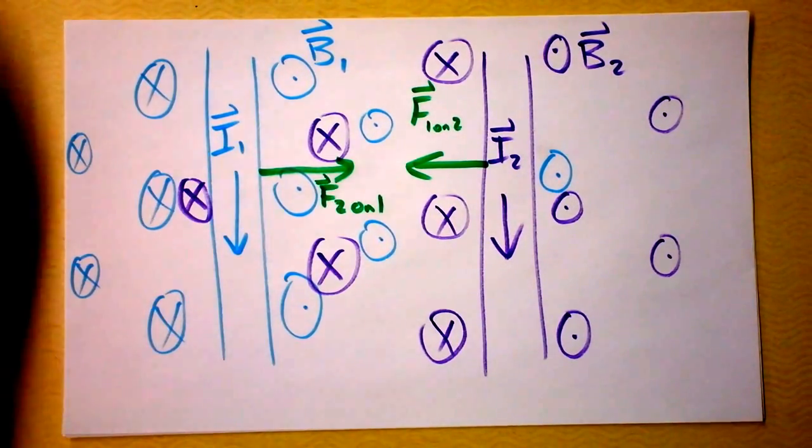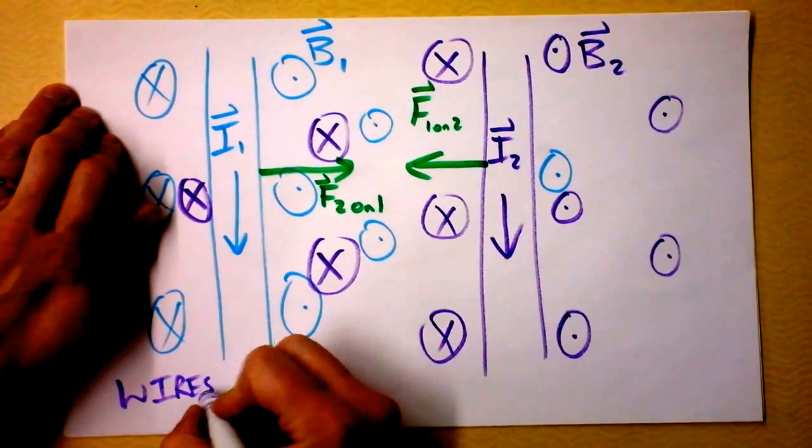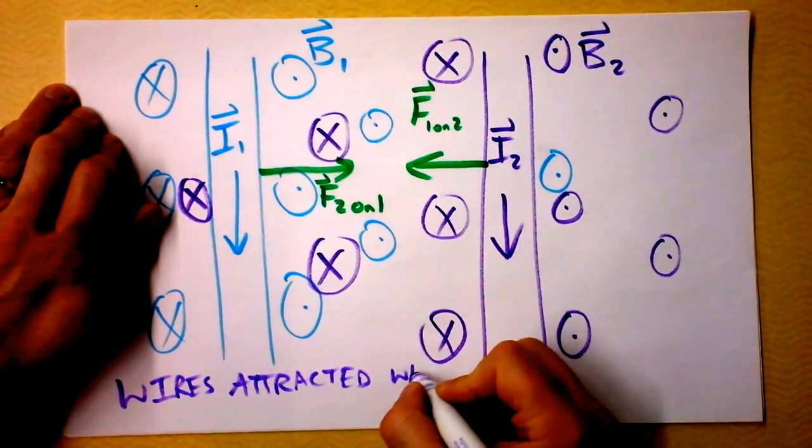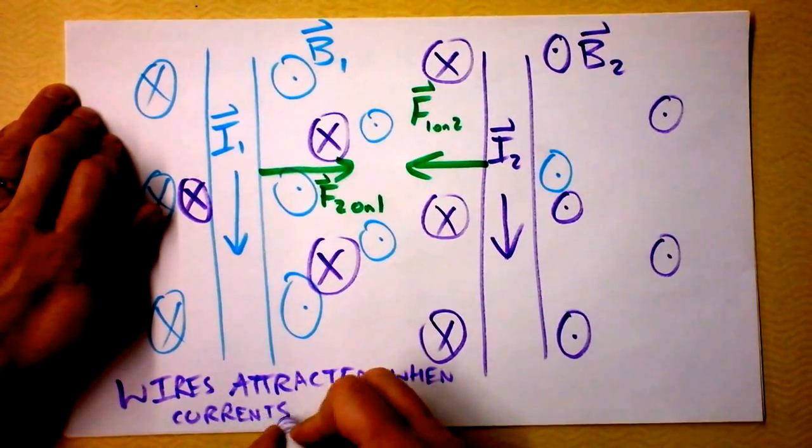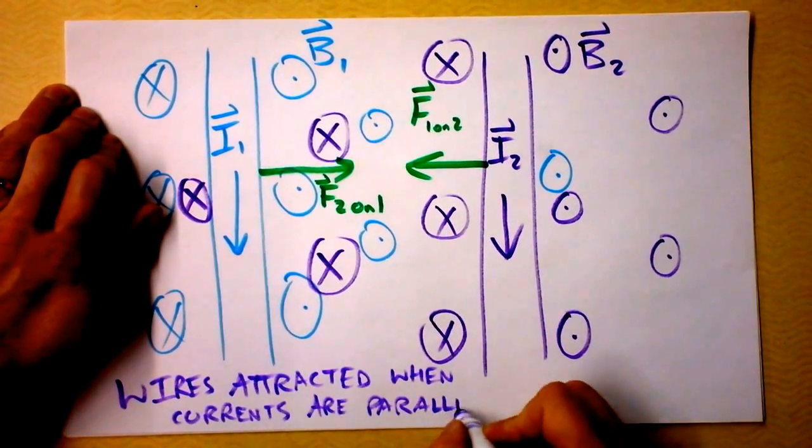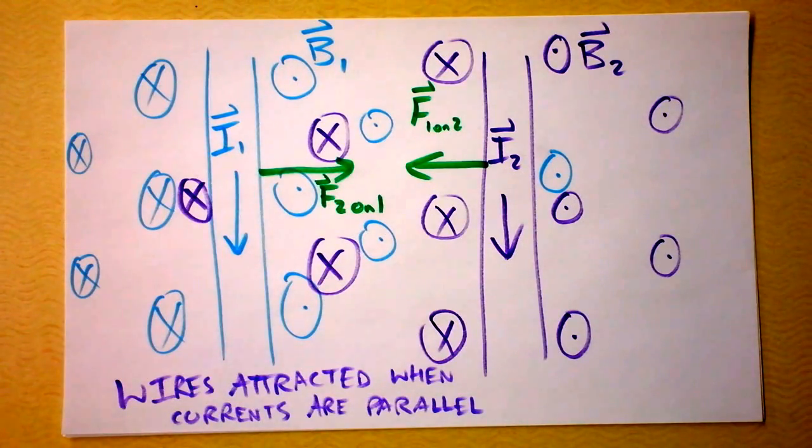I better summarize that because I'm not sure that you fully believe me yet. Wires attracted when currents parallel. Well, this was the result that shocked me. I thought everything was opposites attract. This is same direction, and they attract. And I was just sort of in disbelief. I did not believe that it was correct. But check the derivation. I think you'll find it to be satisfactory.